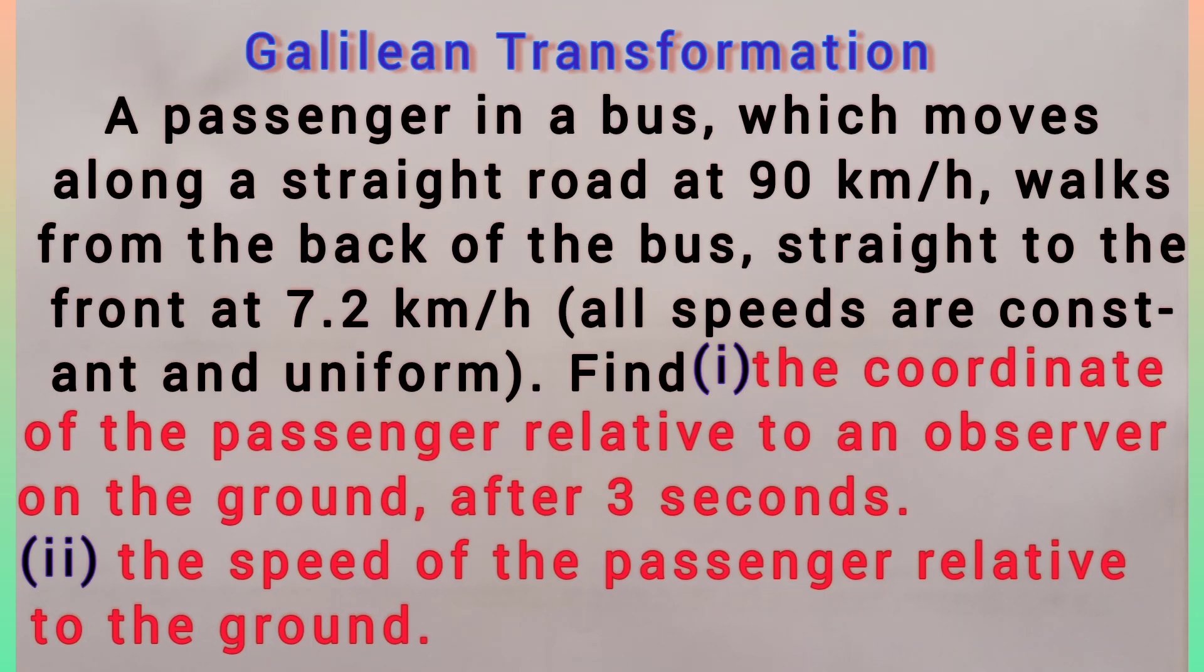A passenger in a bus which moves along a straight road at 90 km per hour walks from the back of the bus straight to the front at 7.2 km per hour. All speeds are constant and uniform.